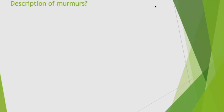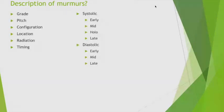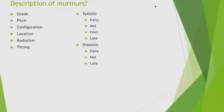This particular murmur description is a late systolic murmur. Summary of murmur description: pitch, quality, configuration, location, radiation, grading, and timing. Now, clicks — what are they? Sudden tensing of valve tissue produces a snapping sound called a click. There are two types: ejection clicks and non-ejection clicks.